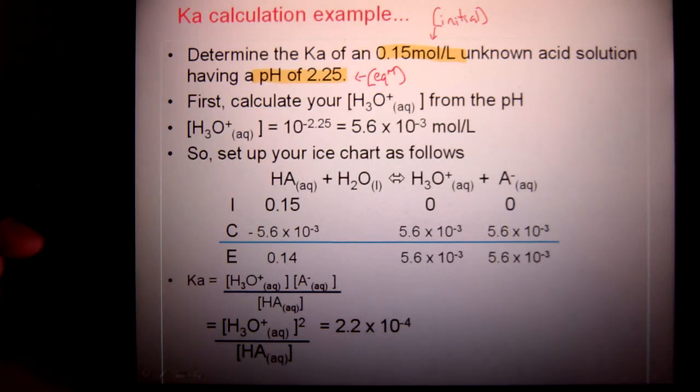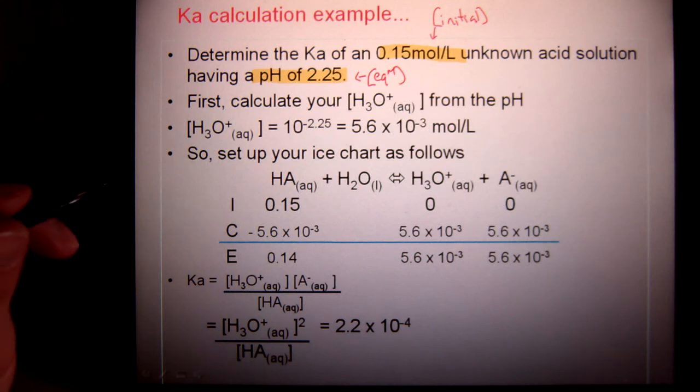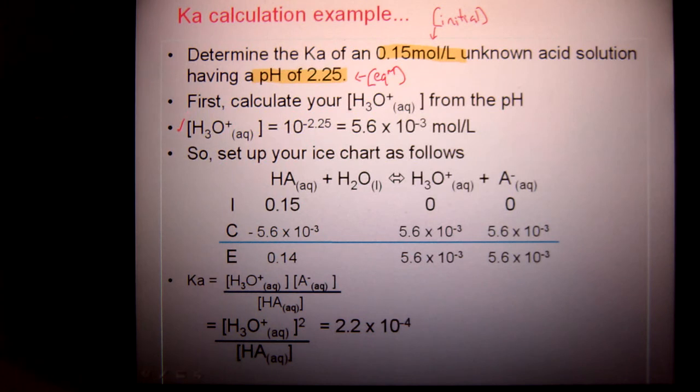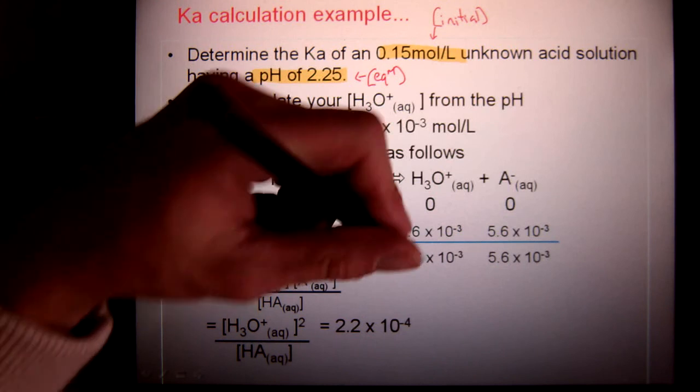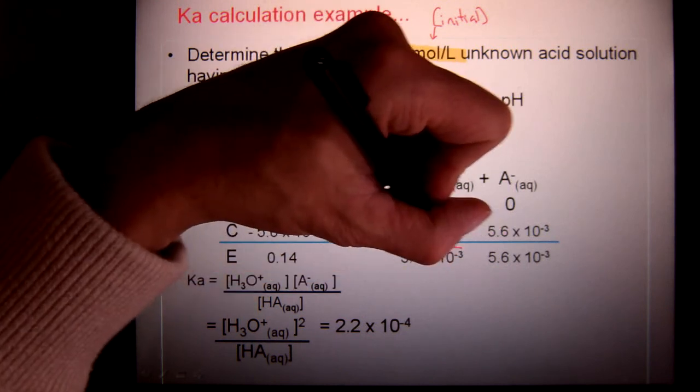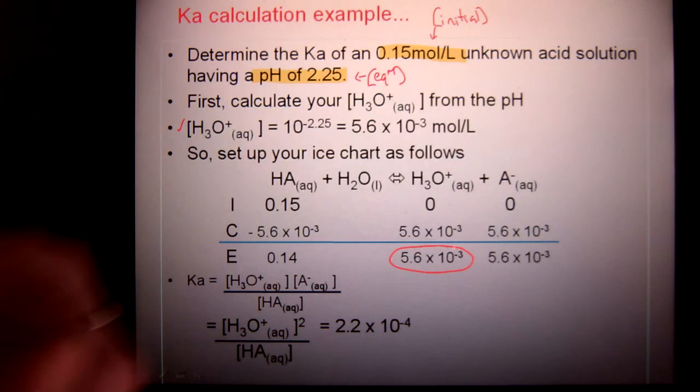So I have a pH. I can't put a pH in my ICE chart. You have to convert it into concentration first. Turn the pH into hydronium and that value was put in as the equilibrium concentration down here.